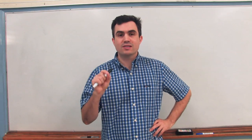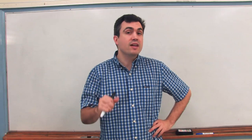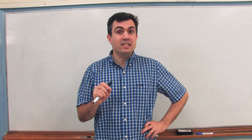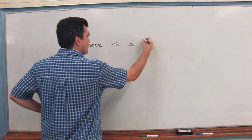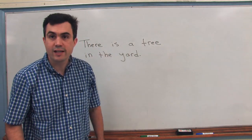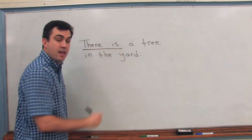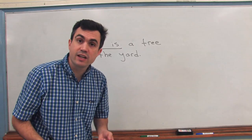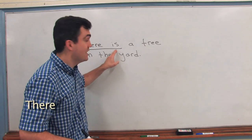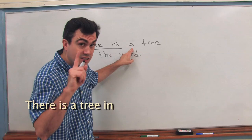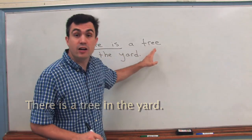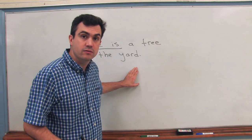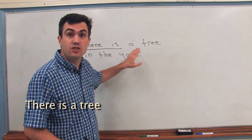We are talking about something that exists, or something that exists in a particular place. For example, 'there is a tree in the yard.' So, 'there is' — something exists. 'There is' is singular. A singular tree. 'There is a tree.' A tree exists.